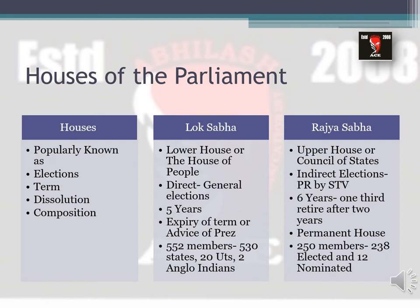The term of Lok Sabha members is five years — after every five years, new members are elected. In Rajya Sabha, one-third of the total members retire after every two years, so generally the membership of a Rajya Sabha member is approximately six years. Regarding dissolution: Lok Sabha can be dissolved after five years or on the advice of the Prime Minister even before five years by the President. Rajya Sabha is a permanent house and never gets dissolved — only members retire every two years.